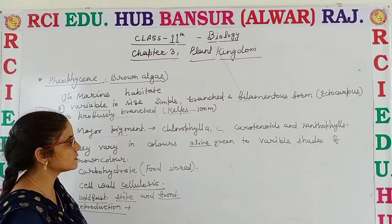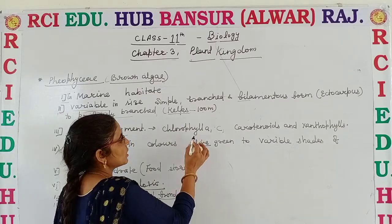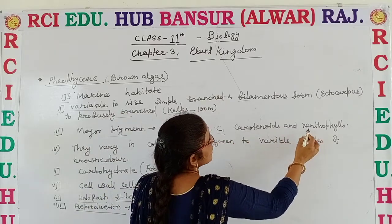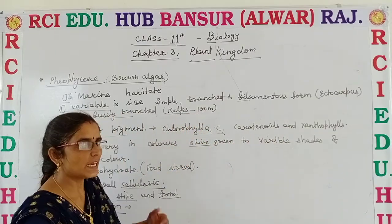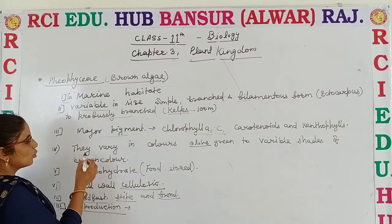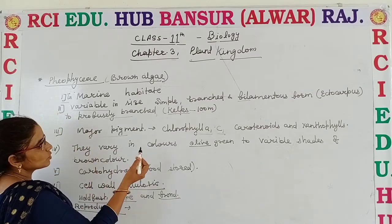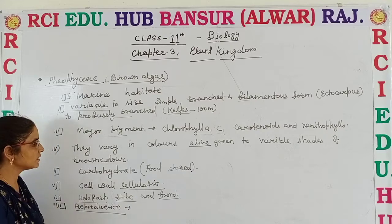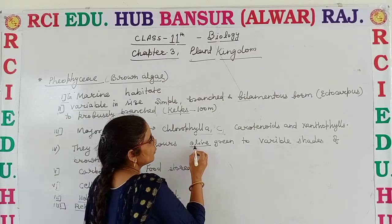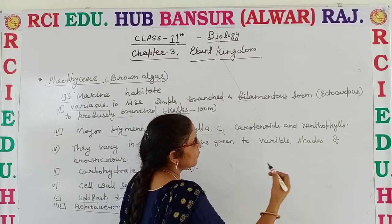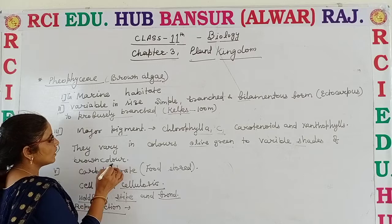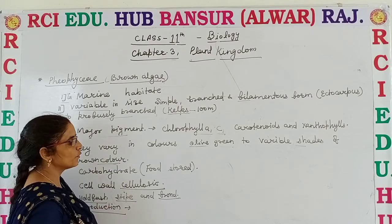Phaeophyceae contains major pigments which are Chlorophyll A and C, plus Carotenoids and Xanthophylls, which give variable color to the Algae. Due to the presence of these pigments, they vary in color from olive green to different shades of brown, according to the proportion of Xanthophylls present.